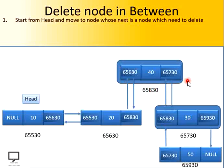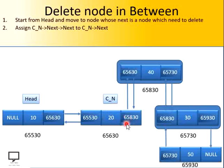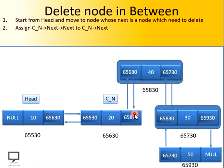Now, what is the next step we are supposed to follow? Make this the current node and assign the next field of the current node to the next field of the node to be deleted. This is your current node — its next field is 65830 and its next field is 65730. Two times we need to take care of the next field. The next field of the current node's next is nothing but 65730, which is the address of the next node of the node we want to delete. We want to form a link between these two nodes. So let's copy this address to the next field of the current node — we have now detached the forward link to the node we want to delete.